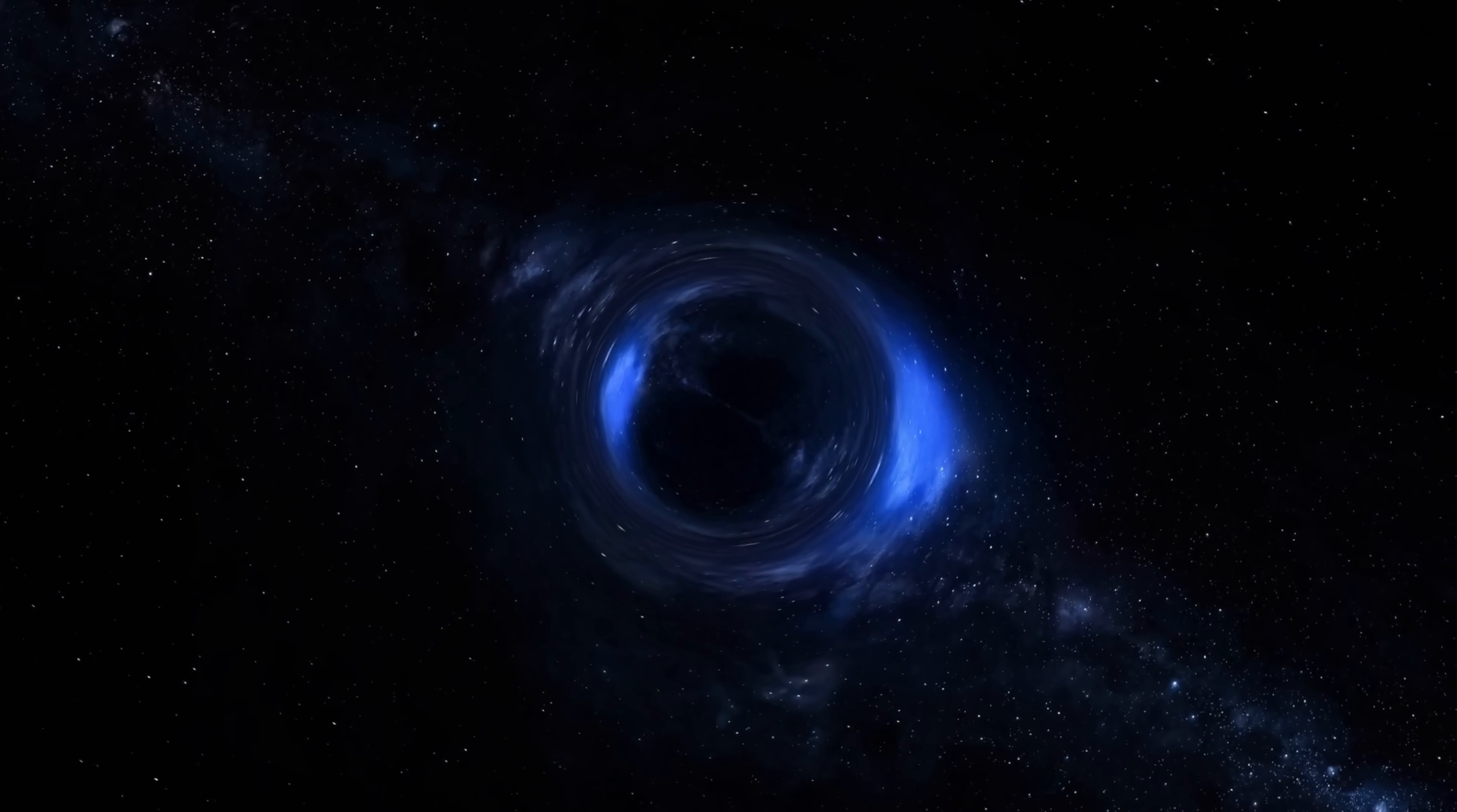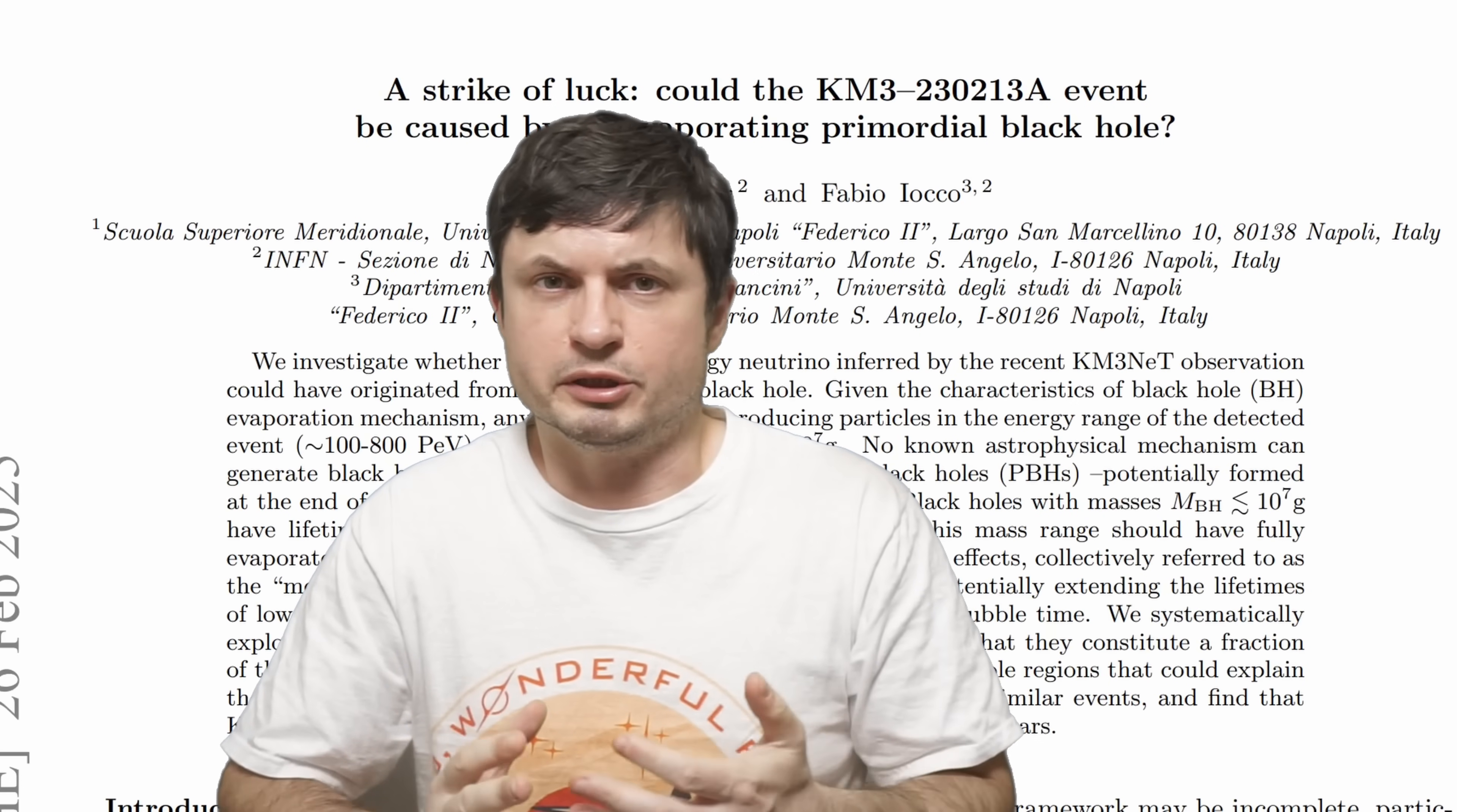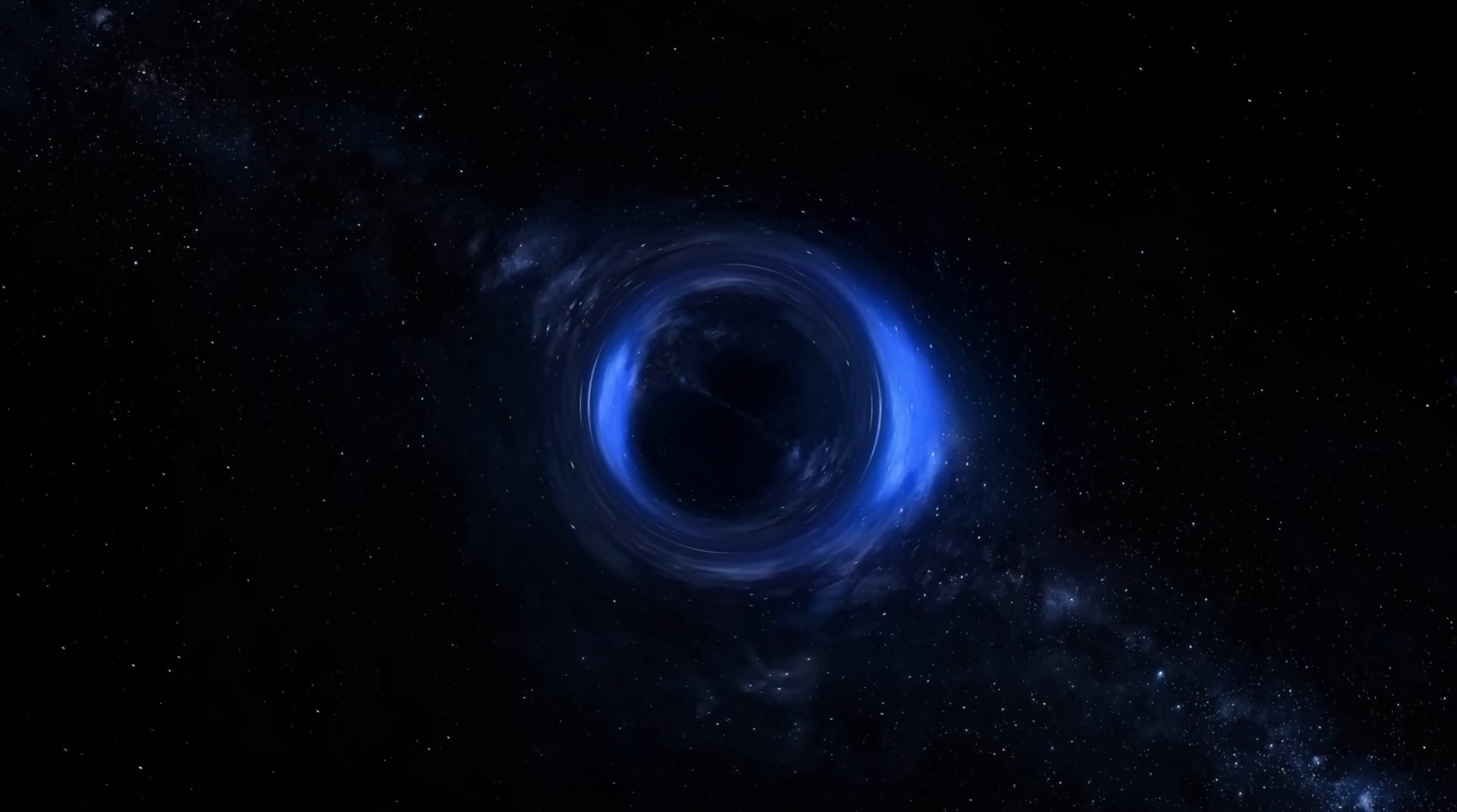But in this new study, scientists do actually propose something that was technically hypothesized by the famous Stephen Hawking back in the 70s, and something researchers have been actually searching for all of these years: primordial black holes. Andrea Boccia and Fabio Iocco, whose names I'm certainly mispronouncing once again, decided to see if it's possible to explain this through the lens of primordial black holes. And specifically, they actually suggest that it is possible to produce these neutrinos through the event proposed by Stephen Hawking.